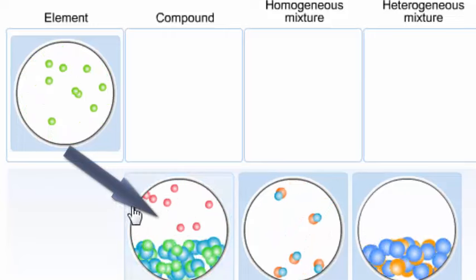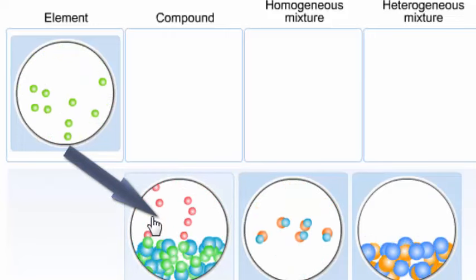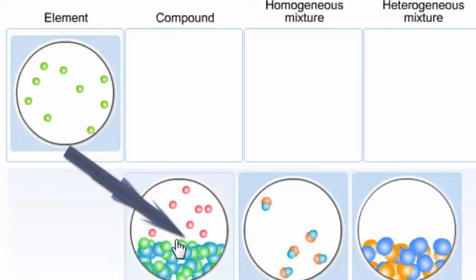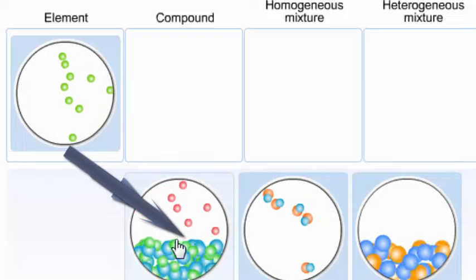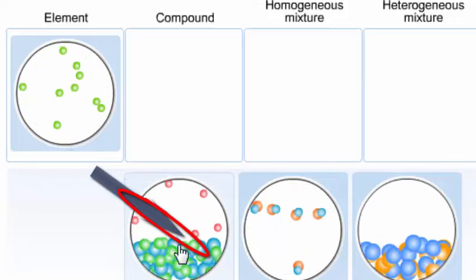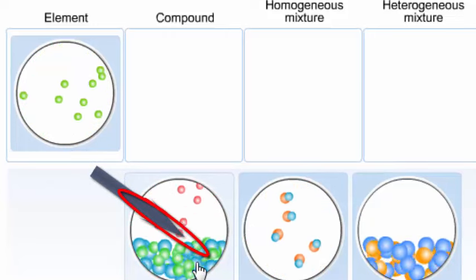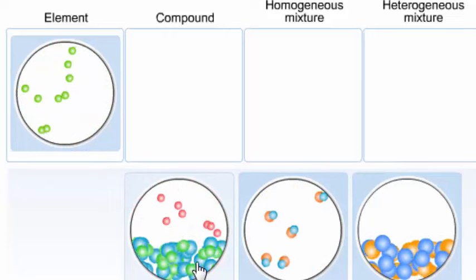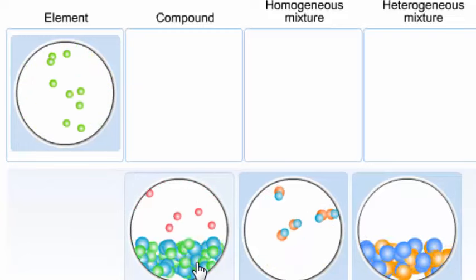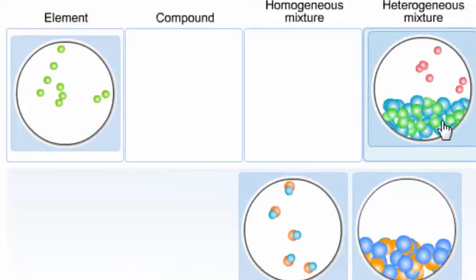In other words, as I travel through it, in this part of the volume, I encounter only the element. At this point, I'm at the interface of the element and the compound, so I'm getting a little bit of each. If I move further through the volume, now I'm encountering only compound. So this is a non-uniform distribution of matter, or a non-uniform distribution of the pure substances. So this is a heterogeneous mixture.